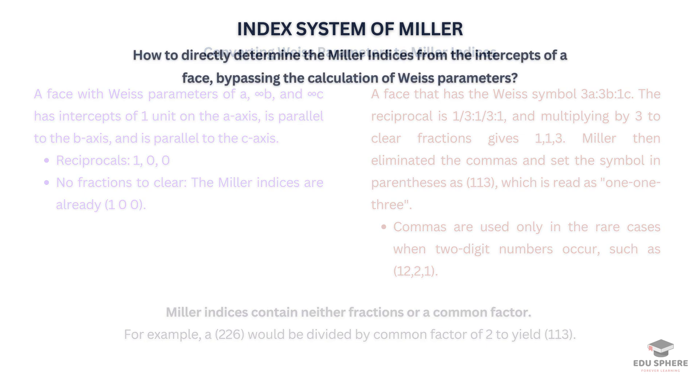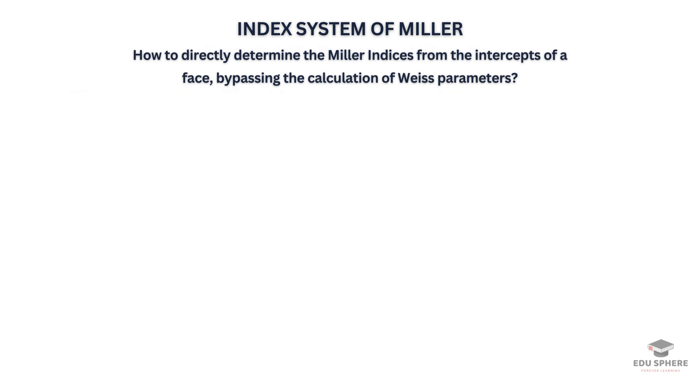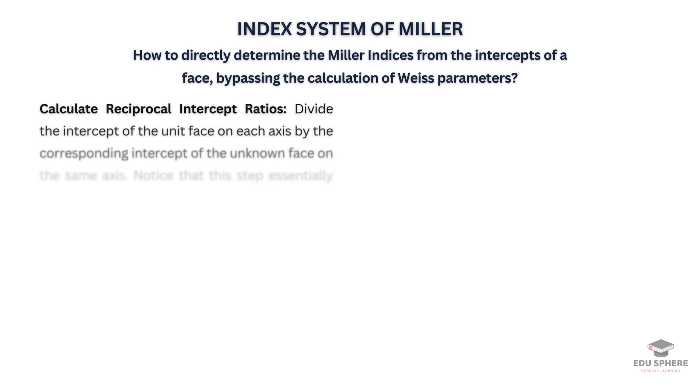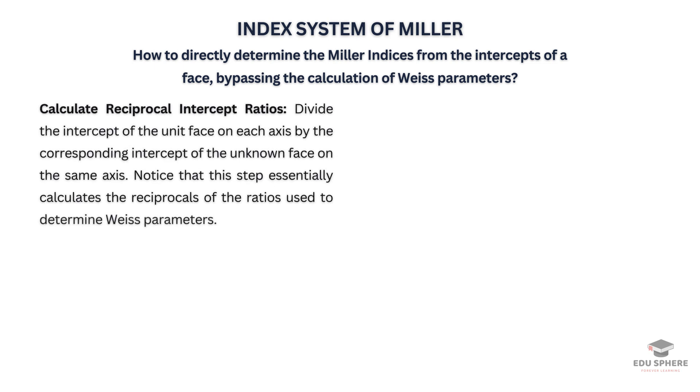Now, what if we want to directly determine the Miller indices from the intercepts of a face, bypassing the calculation of Weiss parameters? Here's the streamlined procedure: First, we divide the intercept of the unit face on each axis by the intercept of the unknown face on the same axis.